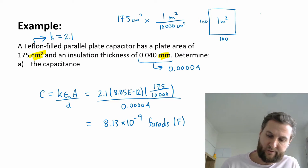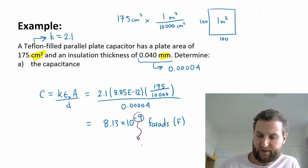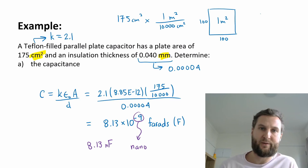Now minus 9 is also an SI unit. We said pico was minus 12. Minus 9 is also nano. So you could say that this is 8.13 nanofarads or little n capital F. You could do that as well.